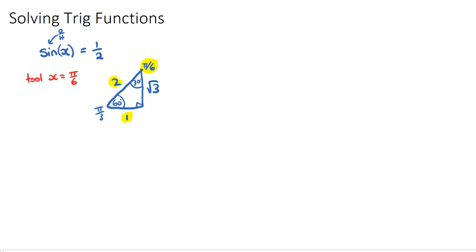Now, I call it a tool angle because often our question has a given domain, a domain where we need to solve our function for x. An example would be 0 to x to pi, and this means that we're going to have multiple answers within our given domain.